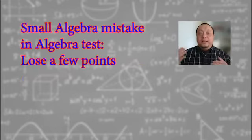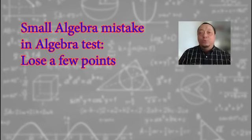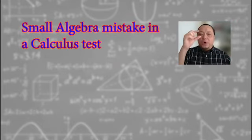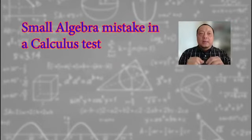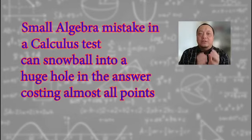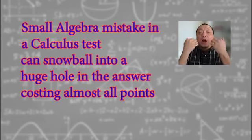When you took algebra, let's say you make a small algebra mistake, then you lose a few points, no big deal. Most people can still get A and B with a few points taken off here and there. But in calculus, if you make a small algebra mistake, it snowballs and grows into a huge hole in your calculus answer that causes you to lose a lot of points.